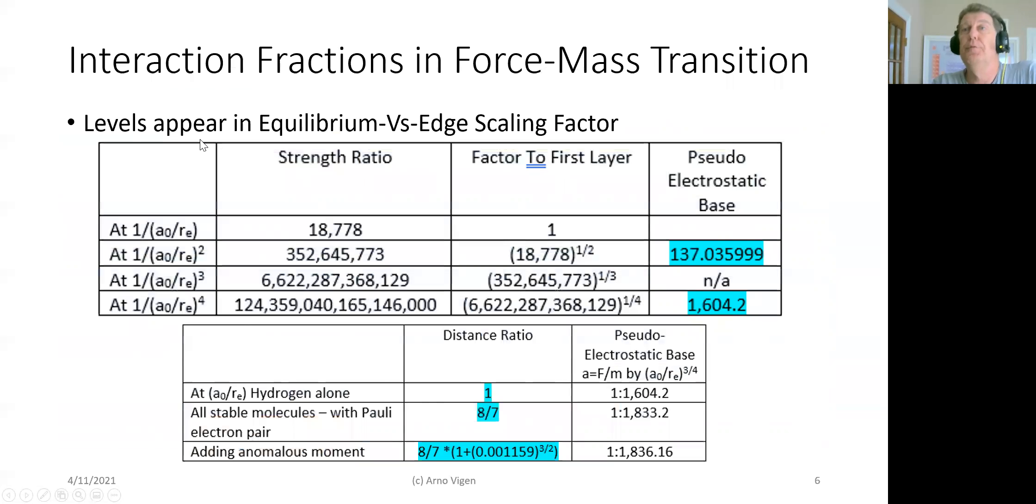As an example of those three quarters, let me just show you. Here's my proof of the mass of a proton versus the mass of the electron. You take that scaling of the Bohr radius, the equilibrium, versus the edge, the radius of an electron, and it has a scale of 18,778.